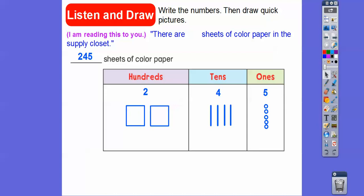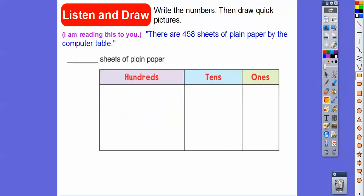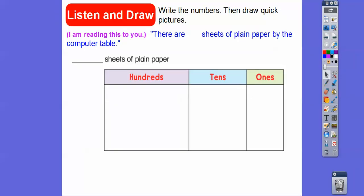All right, same with this one here. So there are 458 sheets of plain paper by the computer table. So we're going to write 458 right there. So 458 goes right there. And then this is the ones. This is the tens. This is the hundreds. So there's 400. So we'll do four squares. And there's 5 tens. So we'll do five sticks right there. And there's eight ones.